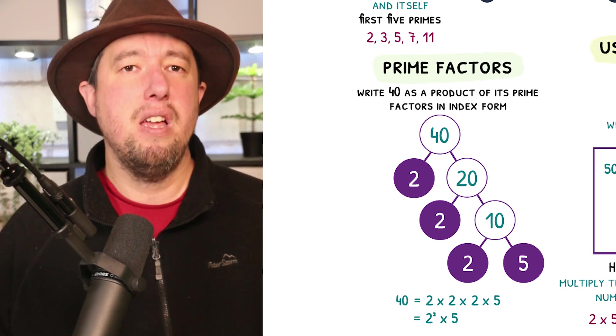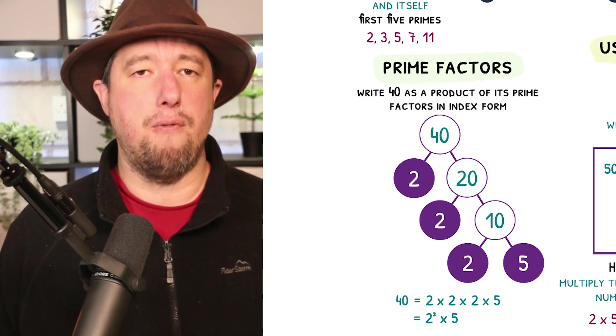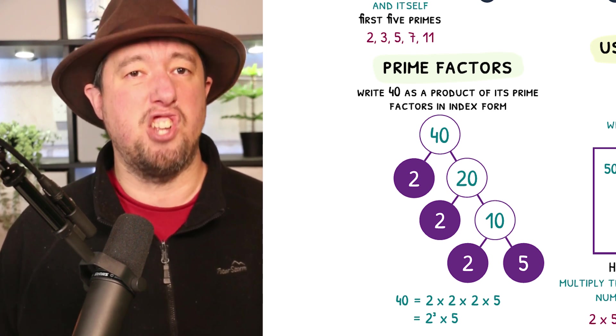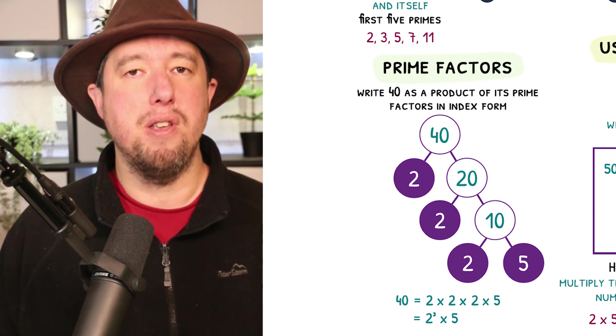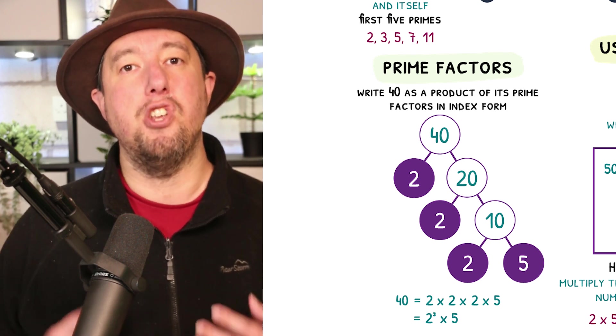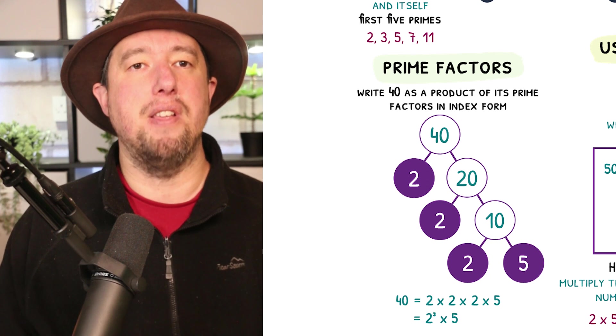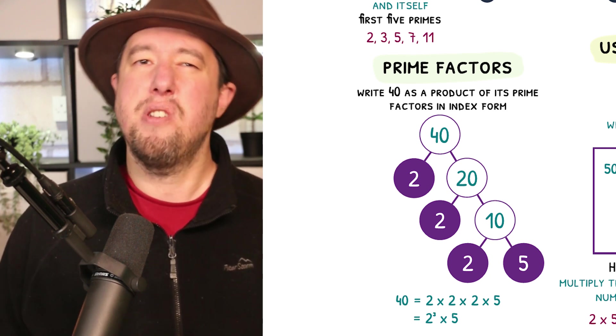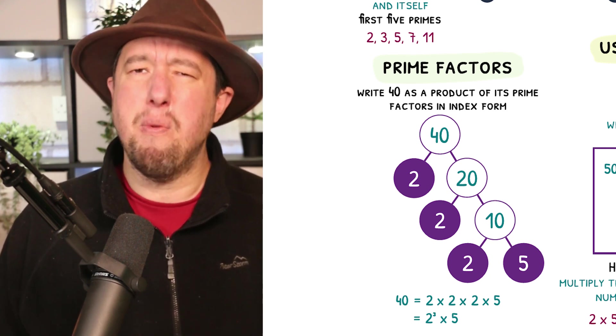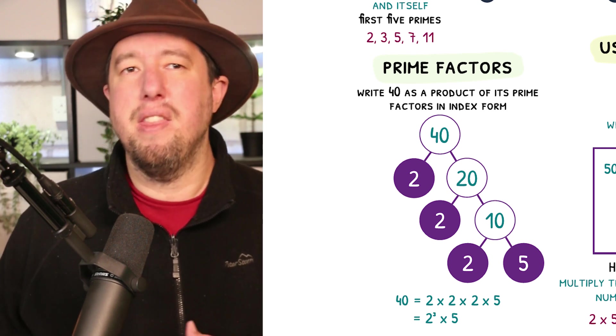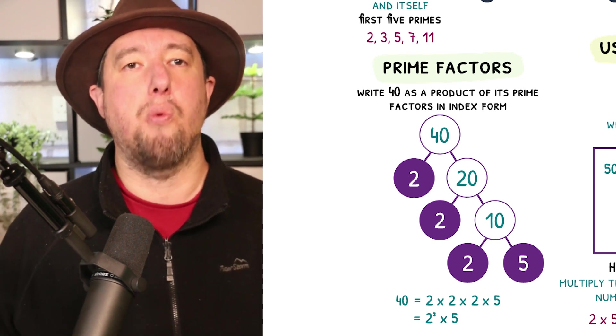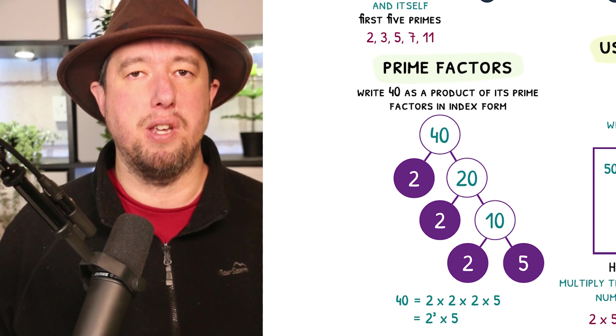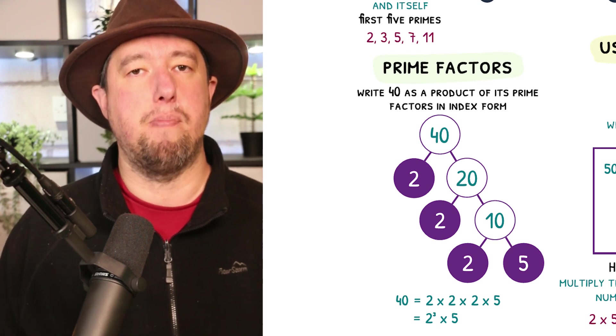To write 40 as a product of prime factors, start by putting 40 in a circle. Every time we have a number in a circle, we're looking to split it up into two numbers that multiply together to make that number. I would advise you starting out with 2 to see whether that works first, then 3, then 5. We can split 40 into 2 and 20, because 2 times 20 is 40, so we show these in circles below.